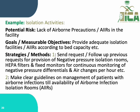The potential risk is a lack of airborne precaution or airborne isolation rooms in the facility. The goals with measurable objectives should be stated clearly, such as providing adequate isolation facilities and airborne isolation rooms according to standards, bed capacity, or risk assessment. Strategies and methods should also be mentioned in detail, such as: sending a request and following up on previous requests for negative pressure isolation rooms, HEPA filters, and fixed monitors for continuous monitoring of negative pressure differentials and air changes per hour.